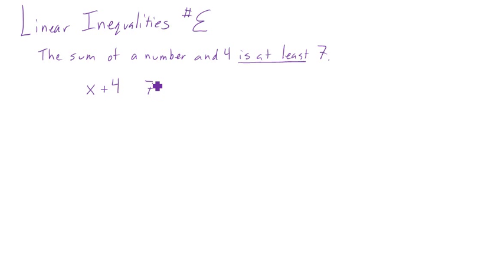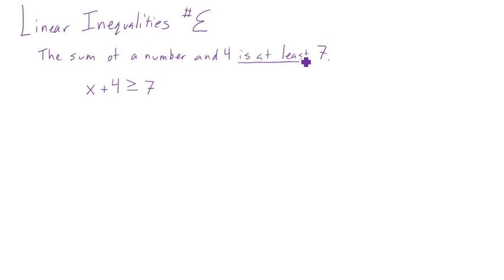Now if you tell me that you have at least 73 boyfriends, then what does that mean? That means you have maybe 73, but maybe 74 or 75, right? That means whatever number this is could be equal to seven, but it might be more than seven. That's what 'at least' means — it means it could be that or it could be more.